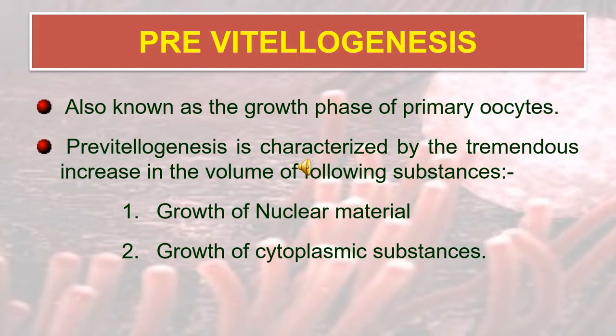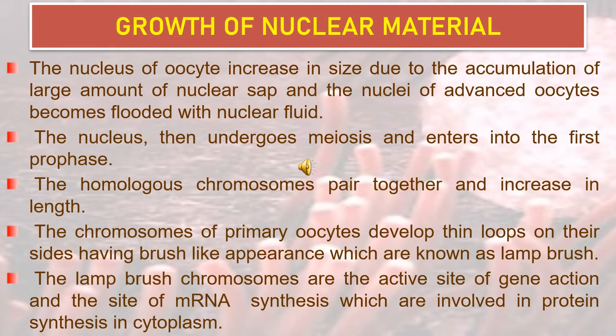Pre-vitalogenesis is also known as the growth phase of the primary oocyte. It is characterized by a tremendous increase in the volume of the following substances: growth of nuclear material and growth of cytoplasmic substances. Regarding growth of nuclear material, the nucleus of the oocyte increases in size due to the accumulation of large amounts of nuclear sap.